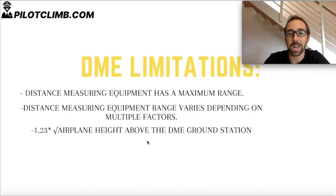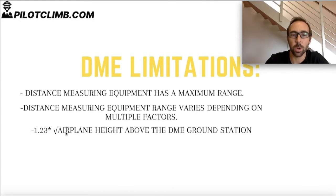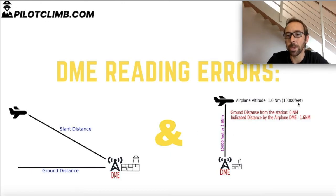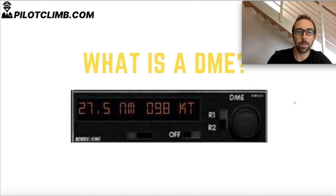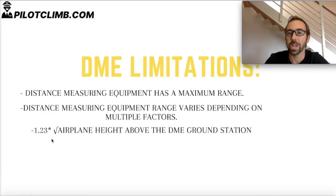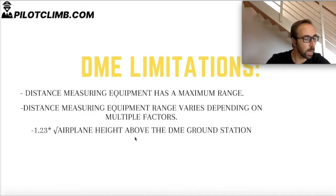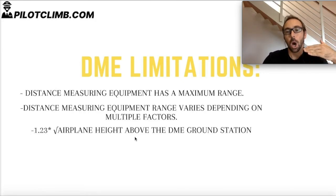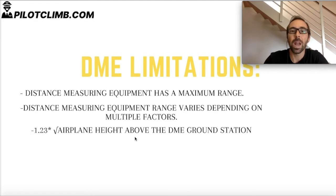There is a formula that gives a rough estimate of the DME range: 1.23 multiplied by the square root of the airplane's altitude above the DME ground station. For example, if the airplane is flying at 10,000 feet, the calculation is 1.23 × √10,000. Since the square root of 10,000 is 100, the result is roughly 123 nautical miles. This means that at 10,000 feet, you can start receiving DME information approximately 123 nautical miles from the station.